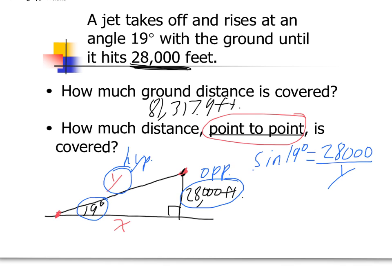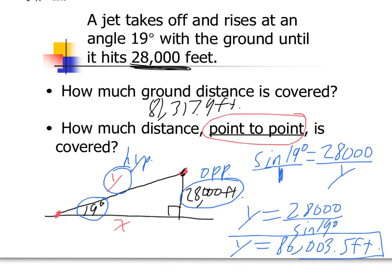And here we go again. Put it over 1. Put it over 1. Cross multiply and solve. I'm going to skip a step and just get right to it. You end up with 28,000 over the sine of 19 degrees, which is about 86,003.5 feet. You might have rounded that to 86,004 feet. That would be fine as well. But that's how you solve a problem like this.